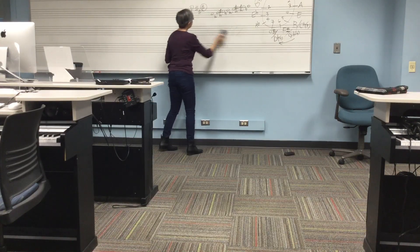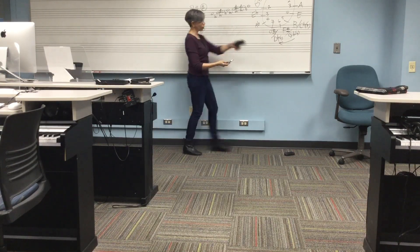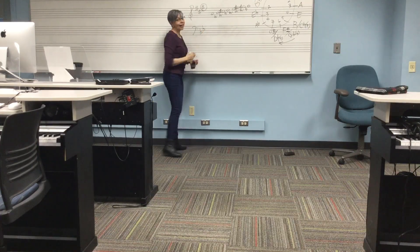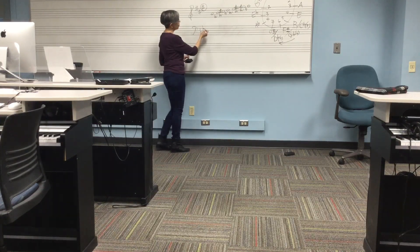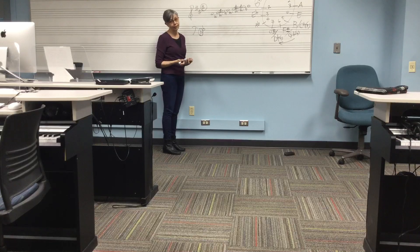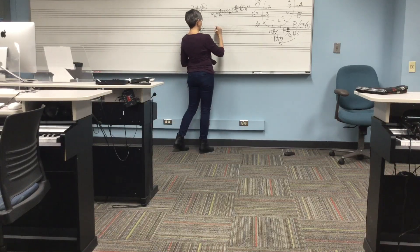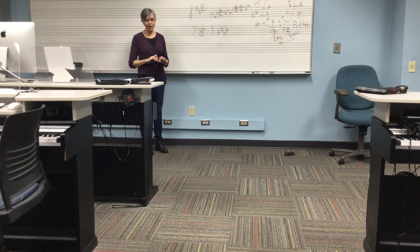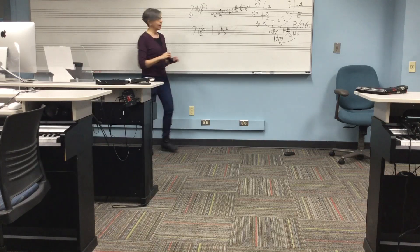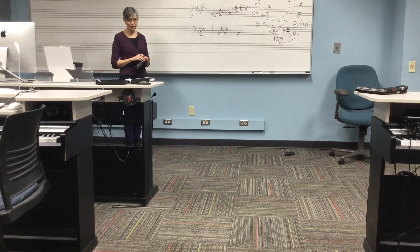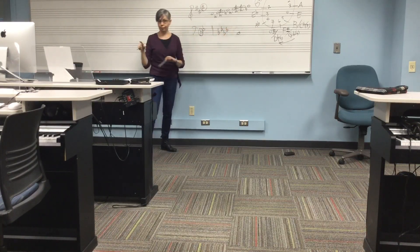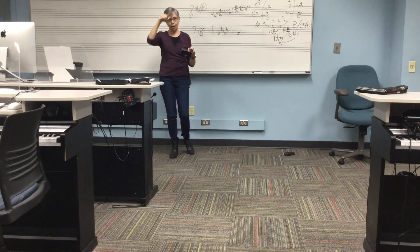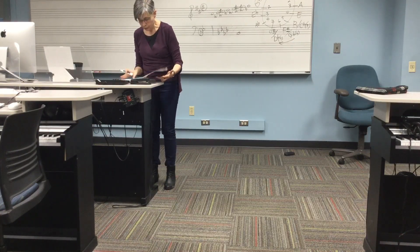For flat key signatures, there's a shortcut: the second-to-last flat is the name of the scale. If you have two flats — B flat and E flat — the second-to-last flat is B flat, so it's B flat major. With four flats — B, E, A, D — the second-to-last flat is A flat, making it A flat major. You can always verify using the whole steps and half steps, or the circle of fifths.